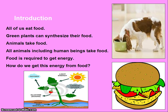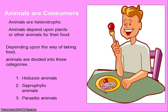Food is required to get energy. Animals are consumers — they are also called heterotrophs. Animals depend upon plants or other animals for their food.